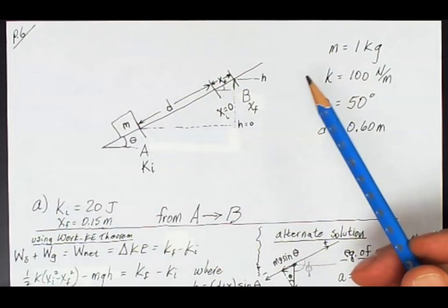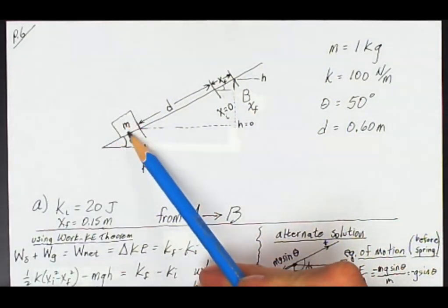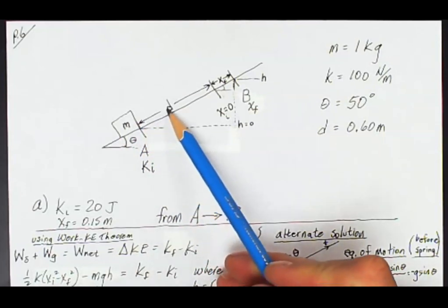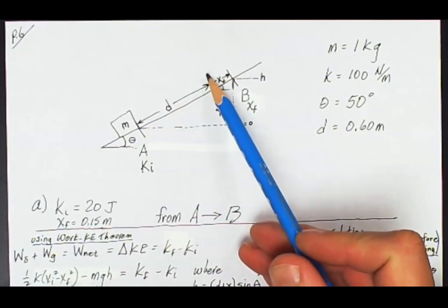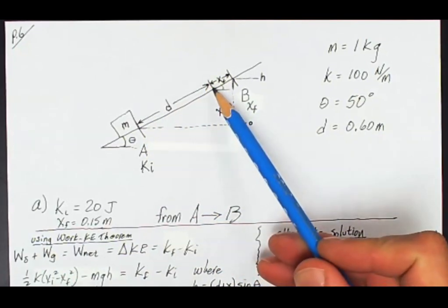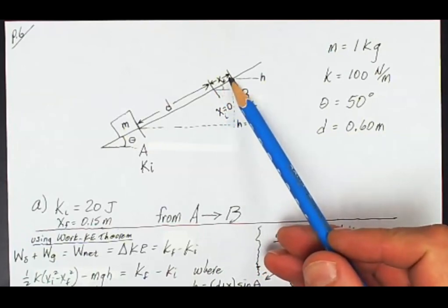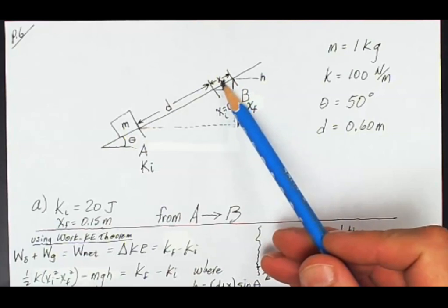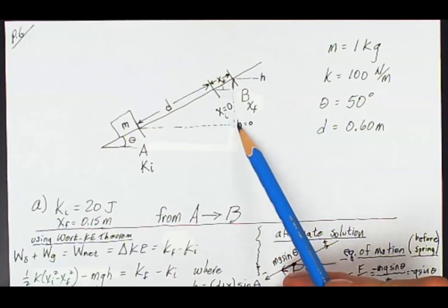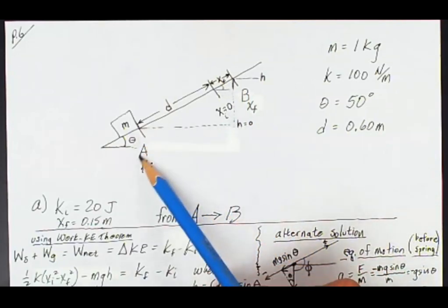Here's the diagram describing our situation. We've got our block of one kilogram right here, starting at position A. It's going to slide up the ramp 60 centimeters until it hits the spring here at x initial equals zero.